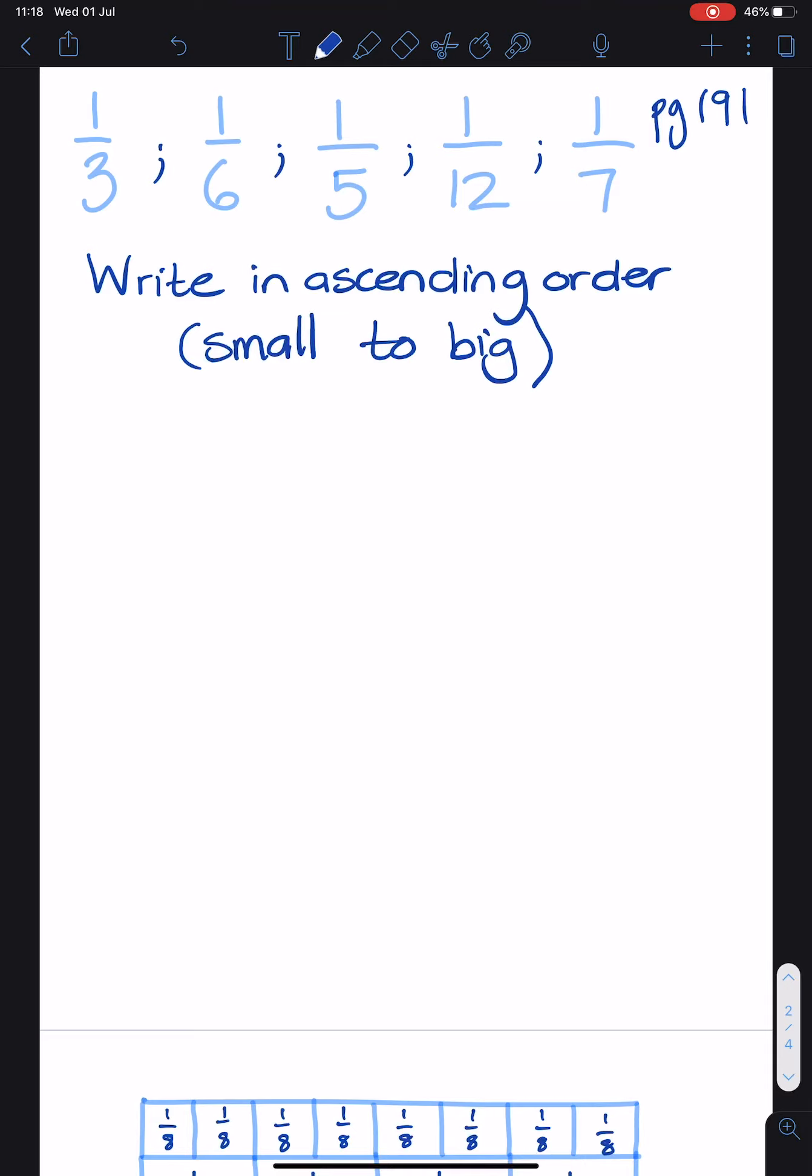In the fraction wall, they show you how many pieces fit into a whole. And you can see the different sizes of the fractions. This fraction wall is going to help us to write these fractions in ascending order. Remember, ascending order is from smallest to biggest. So let's look at the fraction wall.